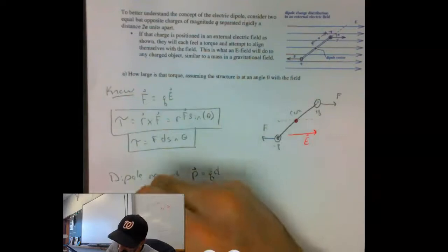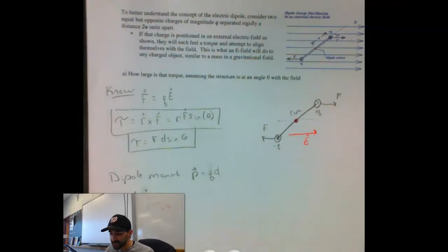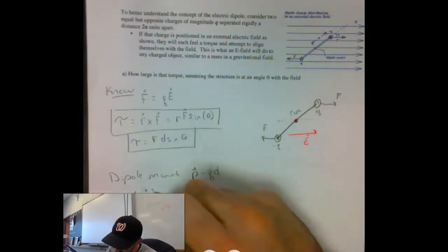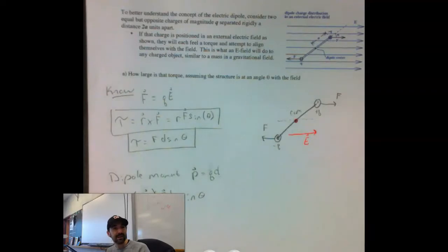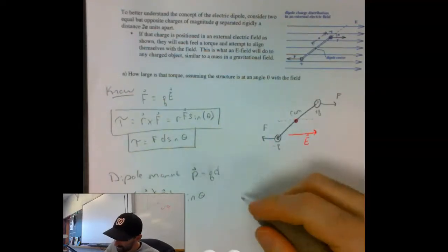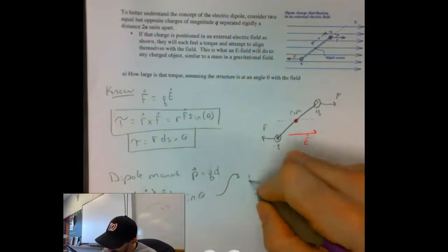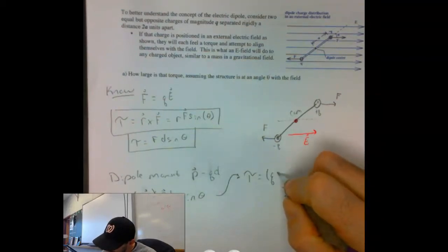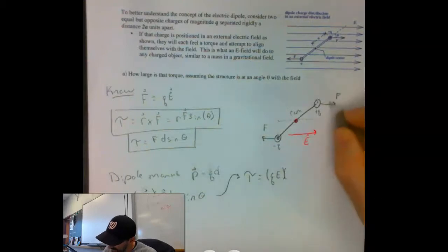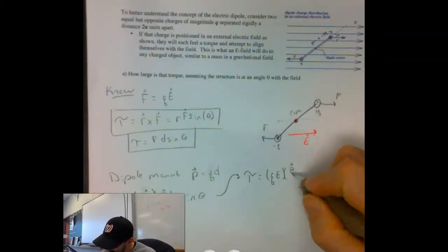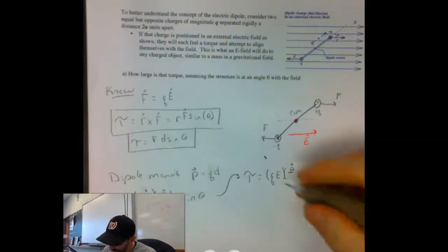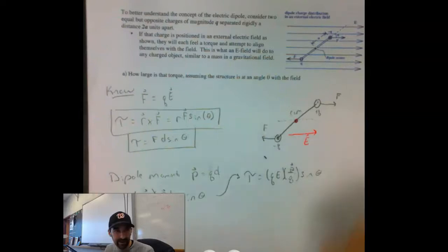My force, we know, force by definition is Q times E. So the torque is going to be Q, the charge times my electric field, times that distance. Well, that distance is just my dipole moment over a charge, times my sine theta. Well, I don't know if we can see that. I'm just going to rewrite it over here. Times that separation distance, which we rearrange for a dipole moment divided by a charge, times the sine theta. Perfect.